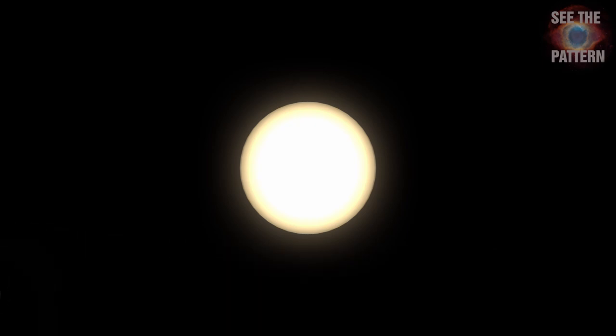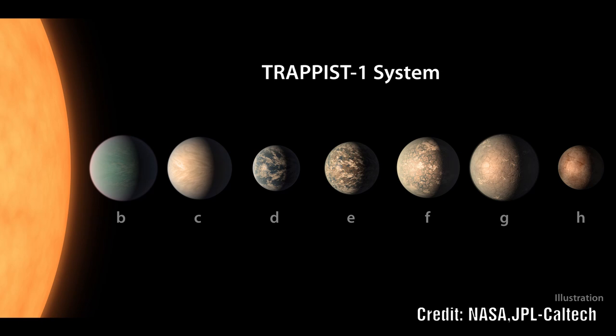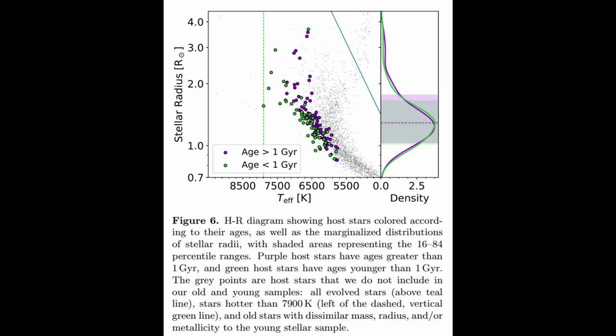But then why would a normally powered star have less sub-Neptune class worlds? It is important to realize that their data only shows a correlation, not the actual change taking place. They determine the age of the star using metallicity, temperature, and color, and then choose a cutoff of 1 billion years.